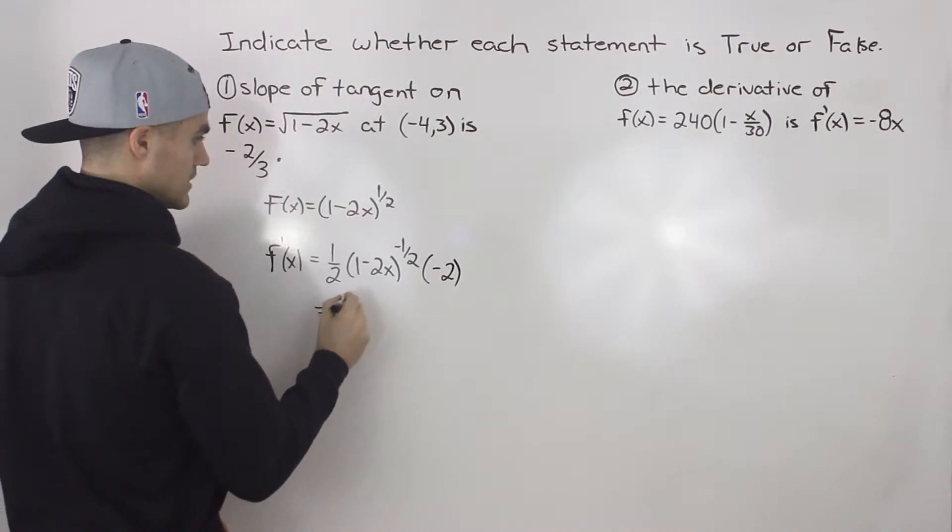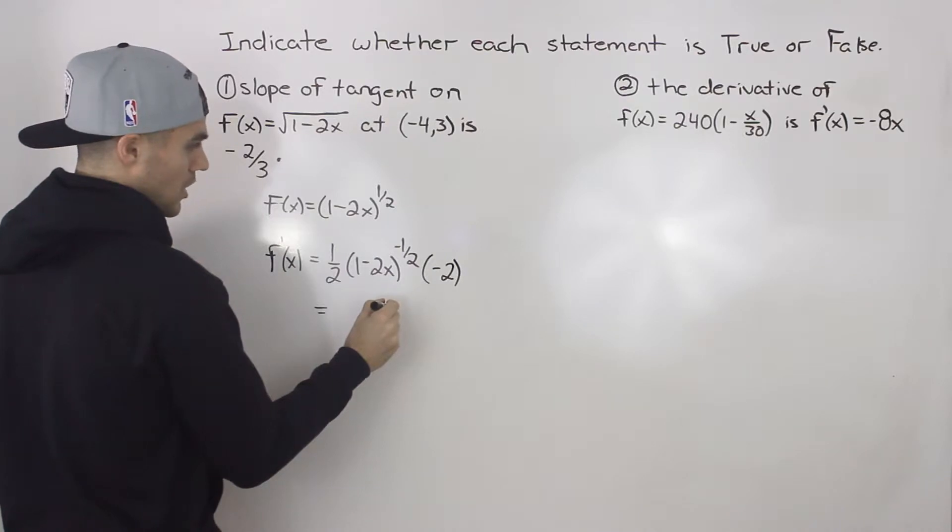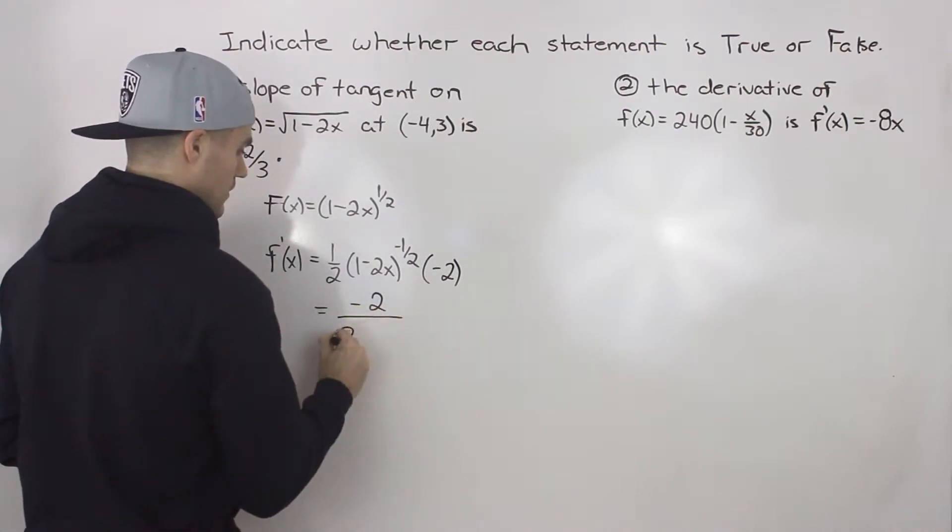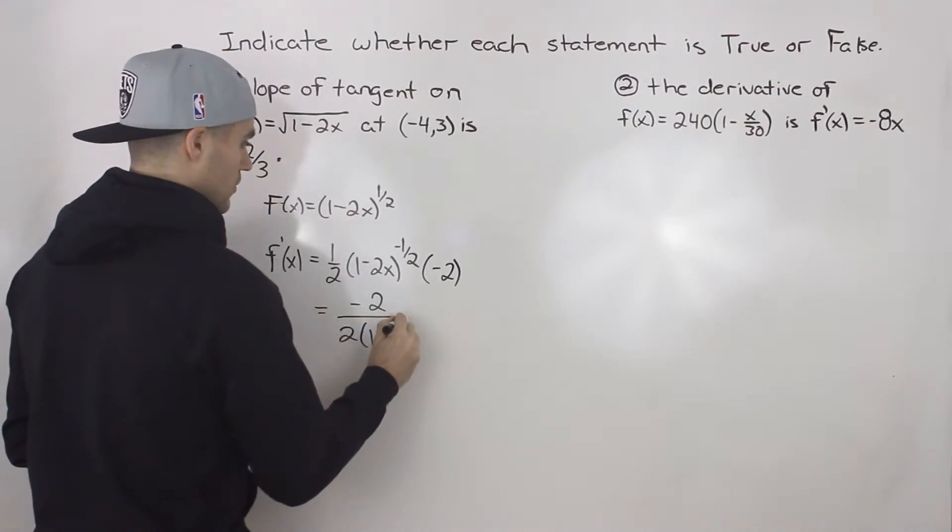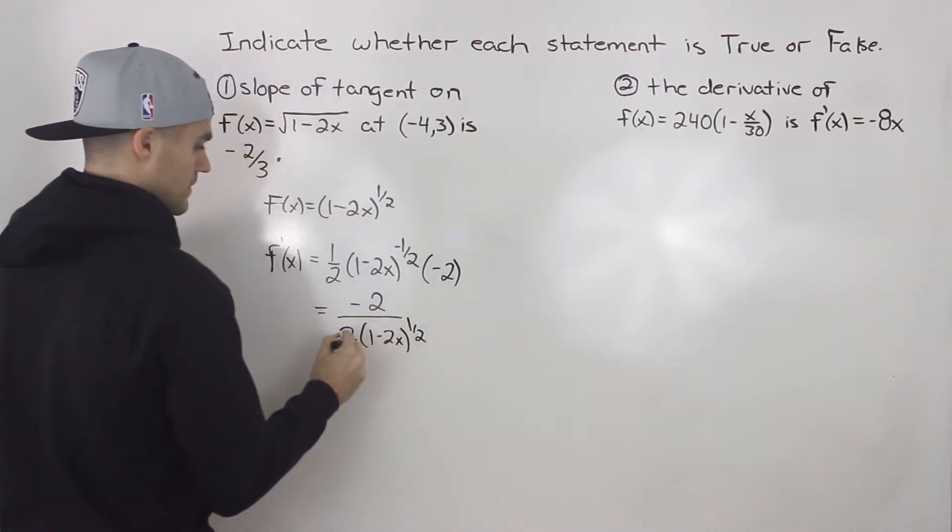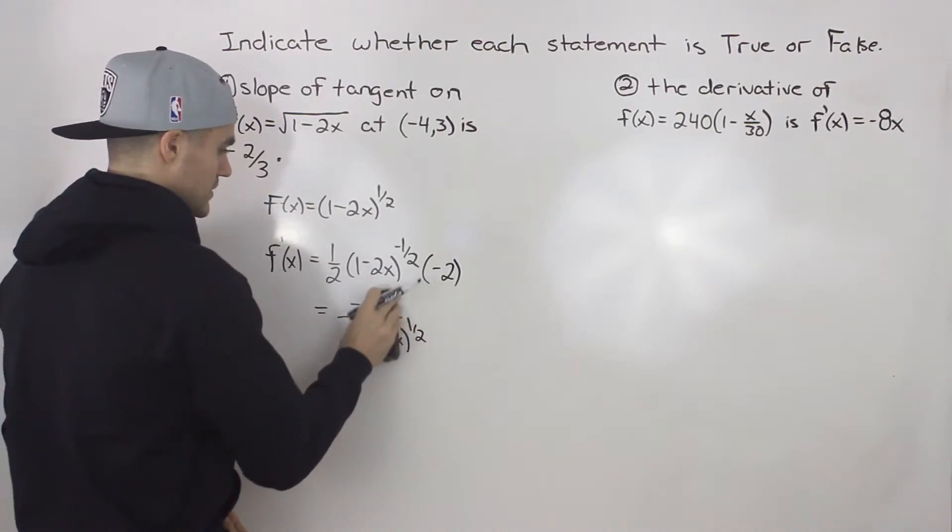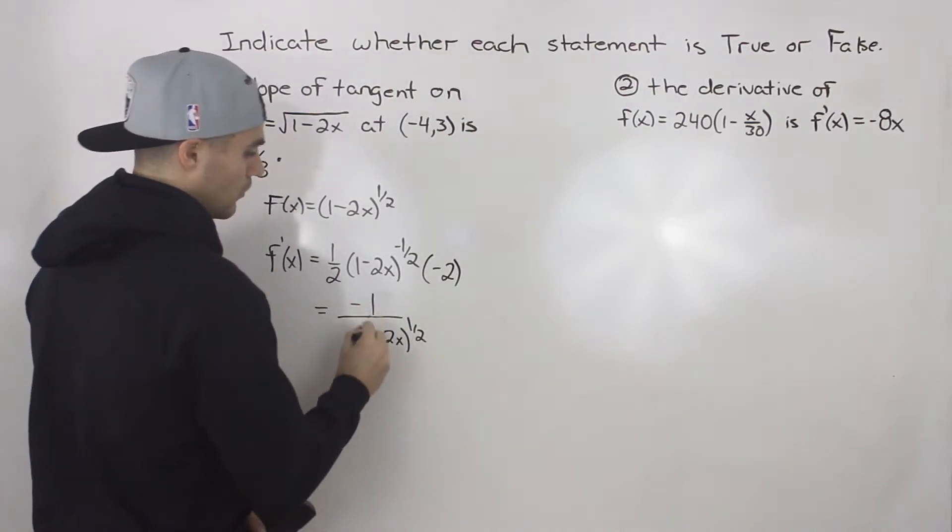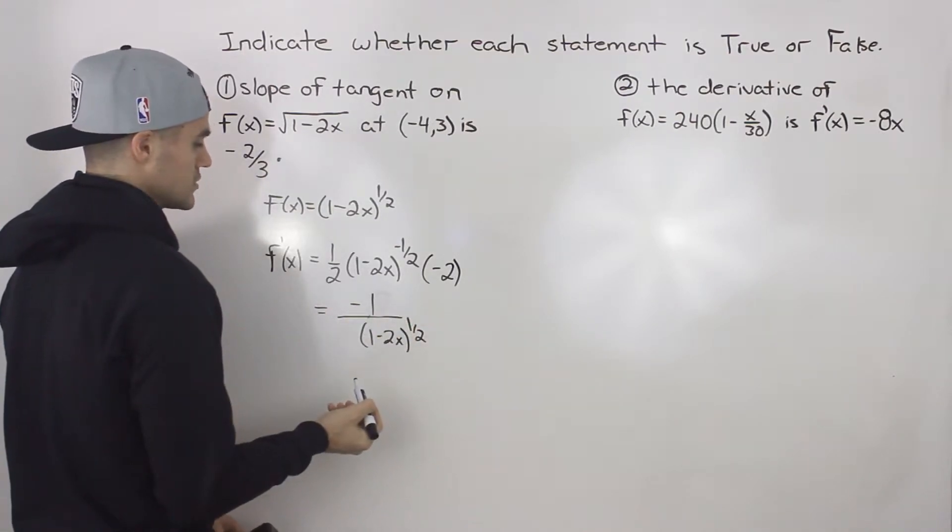To make this look a little nicer, notice this is a negative exponent. So we could bring that down to the denominator, keeping that -2 up top. And then we would have (1 - 2x) to the power of a positive 1/2. And then these 2s here will cancel out. So we'll just be left with -1 over the square root of (1 - 2x).